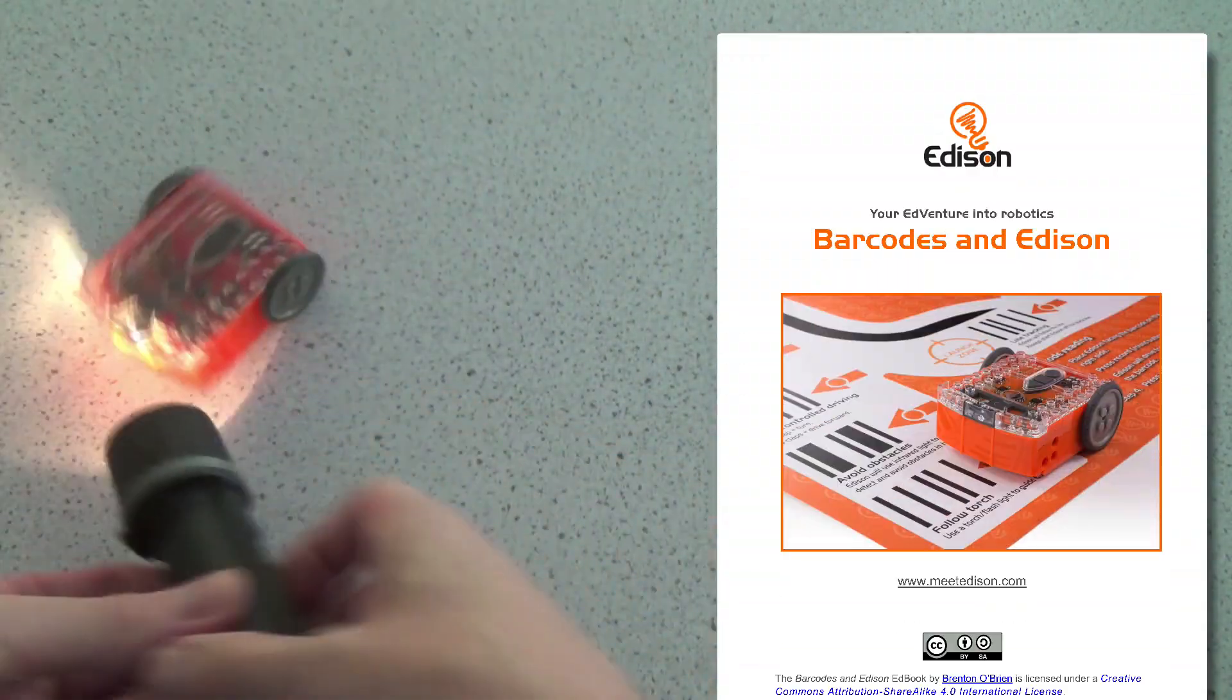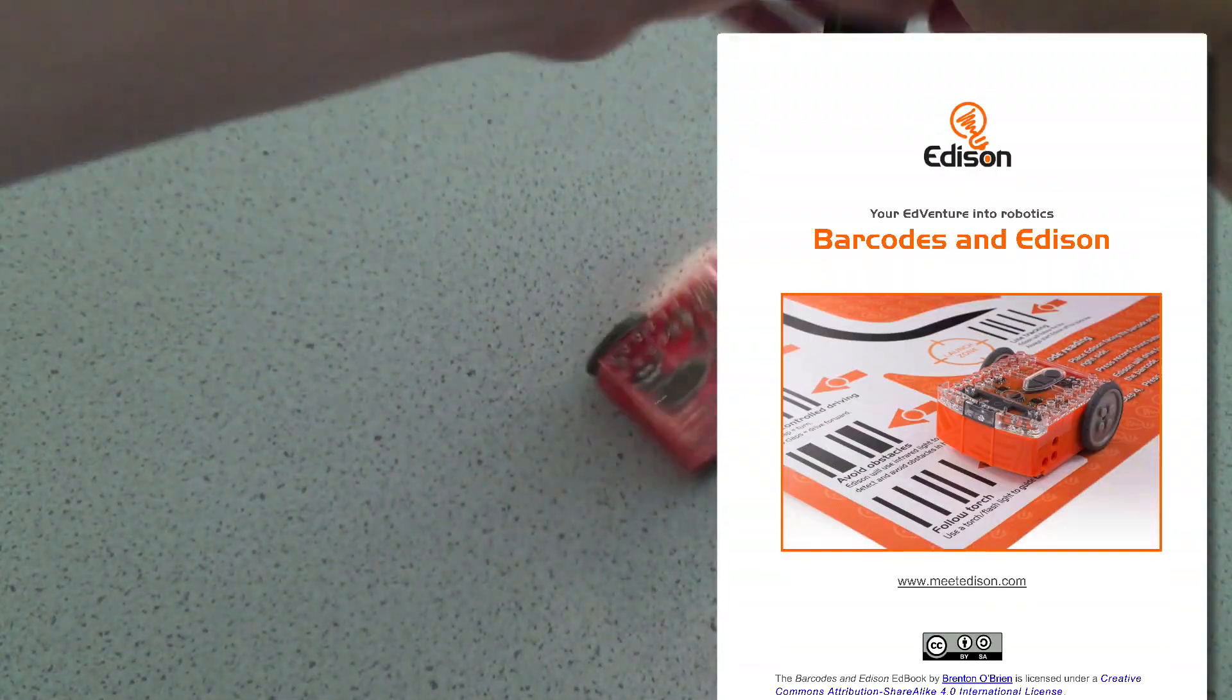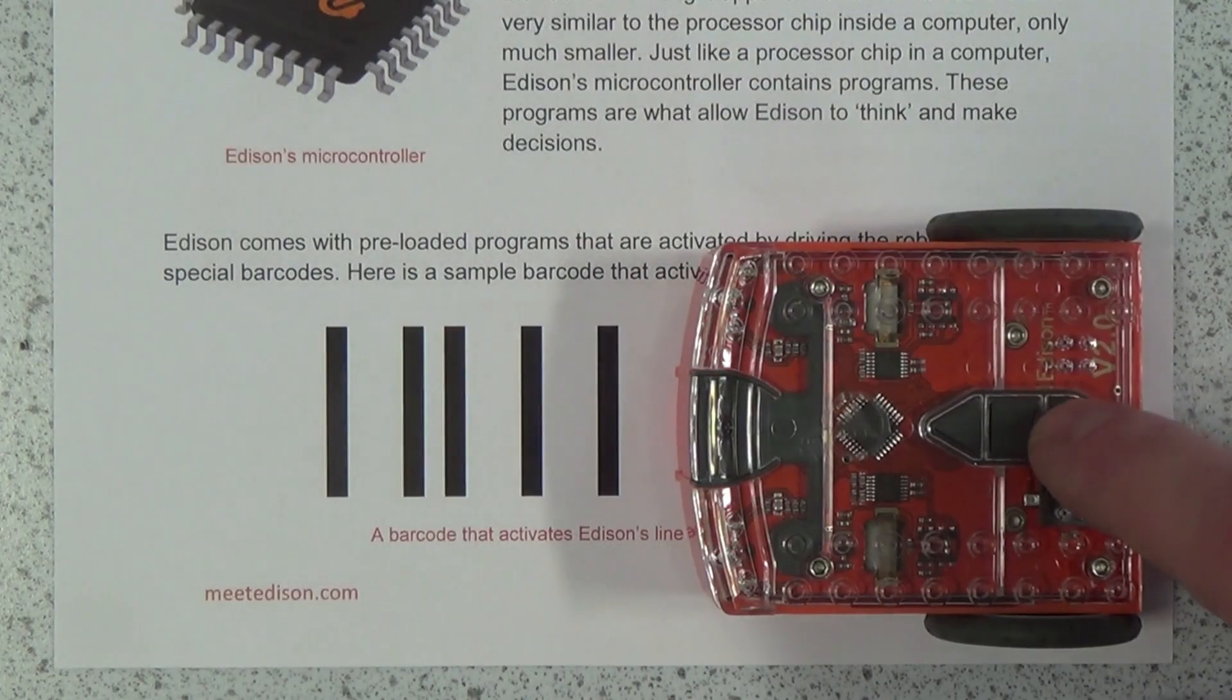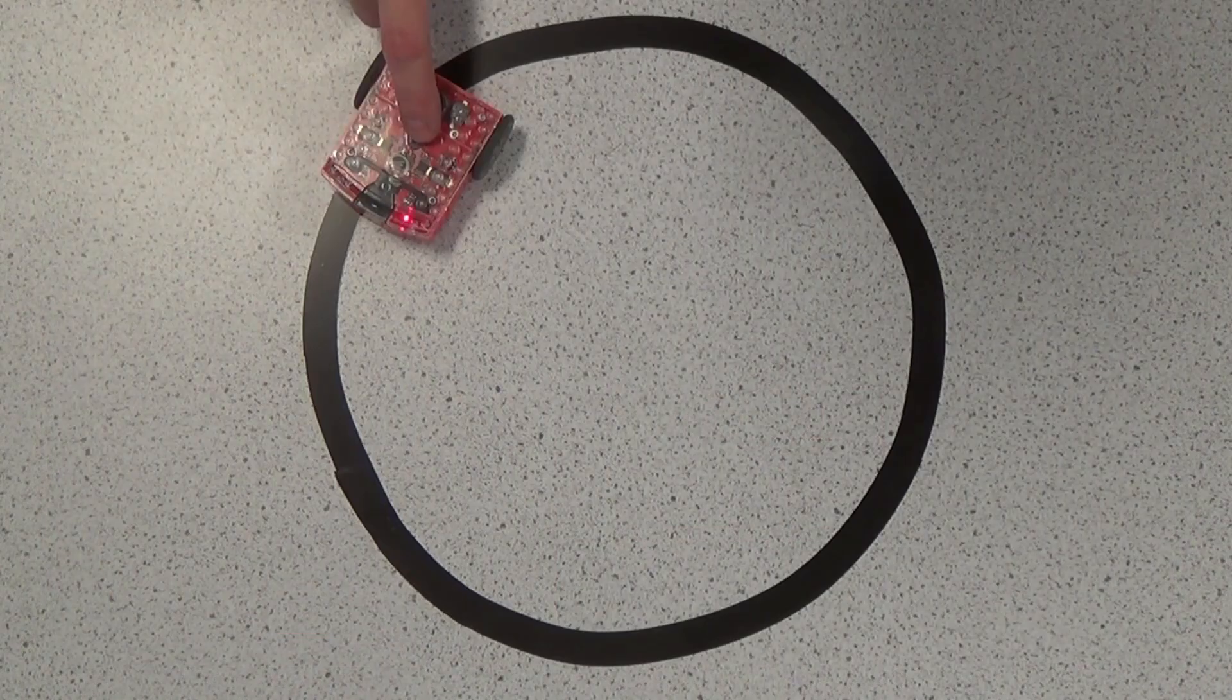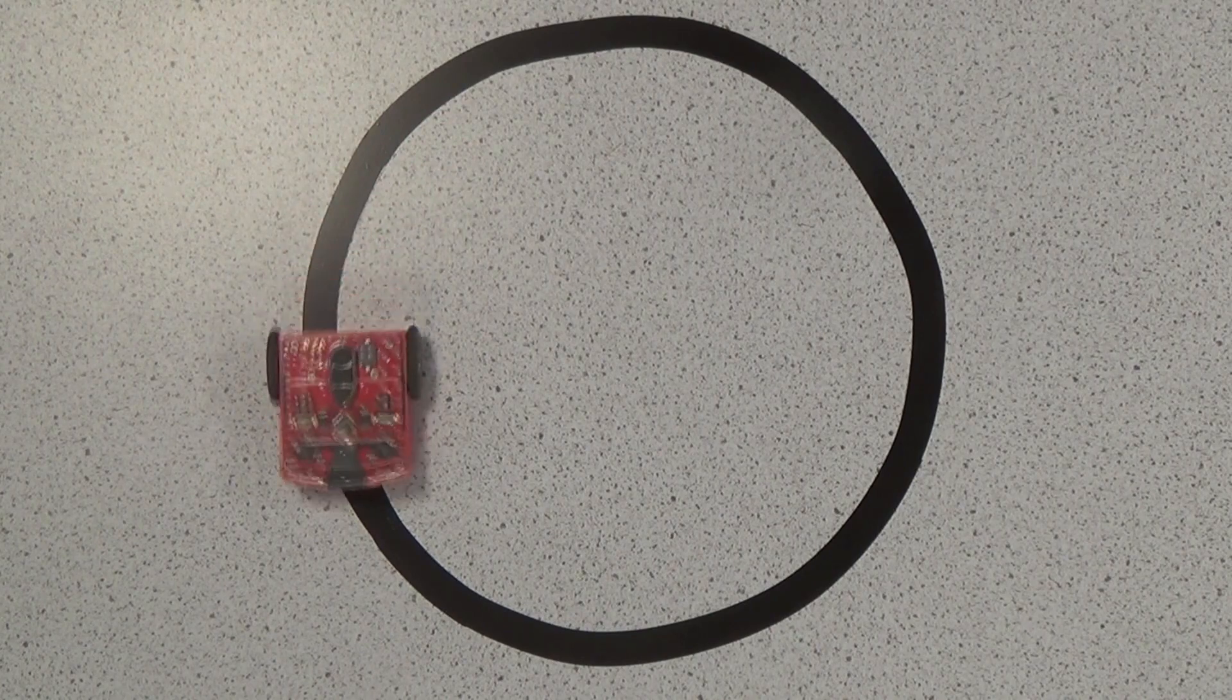To access the other programs, you can print this booklet, which is found at meetedison.com. So, we could scan a page in the booklet that allows Edison to follow a line like the one I've made here in black tape.